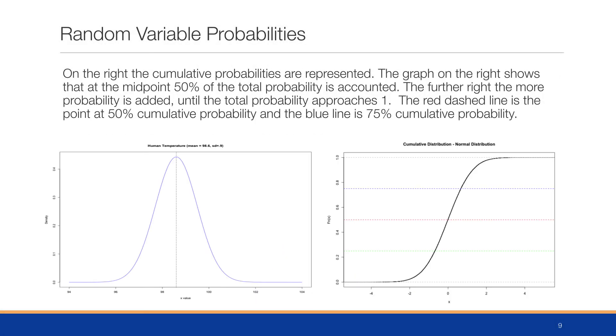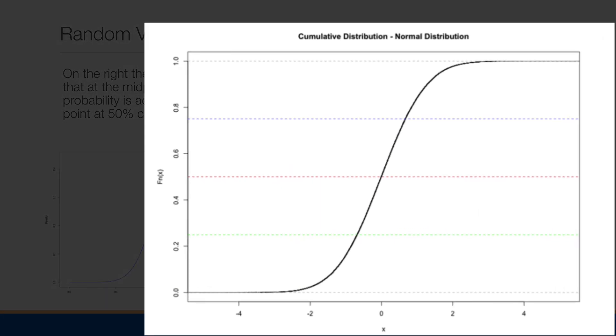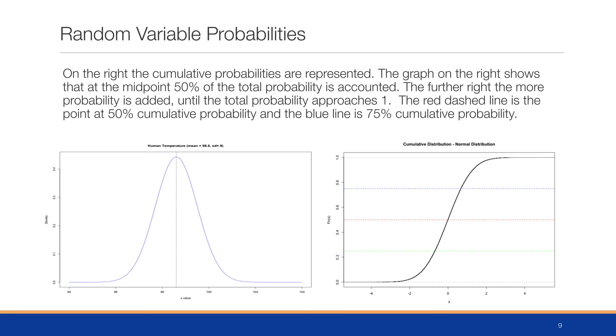Looking more closely on the right side, we can demonstrate what the cumulative probability looks like. The graph on the right shows that the midpoint, 50% of the probability, is accounted for at that zero. That red dashed line is 50%, and the average here is zero. As we continue adding more, the probability continues to increase because it is adding all previous probabilities. The probability of being less than two is going to be somewhere around 95% or 0.95 in this area, and we get what's known as this S-curve.